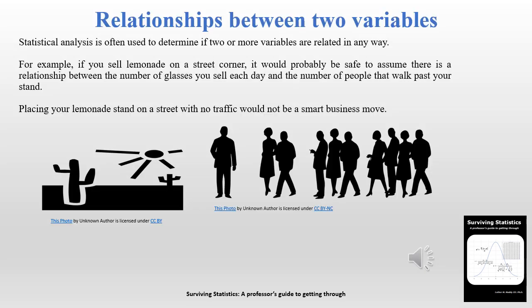In the first chapter we talked about the power of statistics and where we really want to use it — inferring or predicting things — and one of the tools we can use for that is examining relationships between two variables. For example, let's assume we're selling lemonade on a street corner. There's probably a relationship between the number of glasses of lemonade we sell and the number of people who walk past the stand. If placed in the desert where there's no traffic, we're probably not going to sell any lemonade.